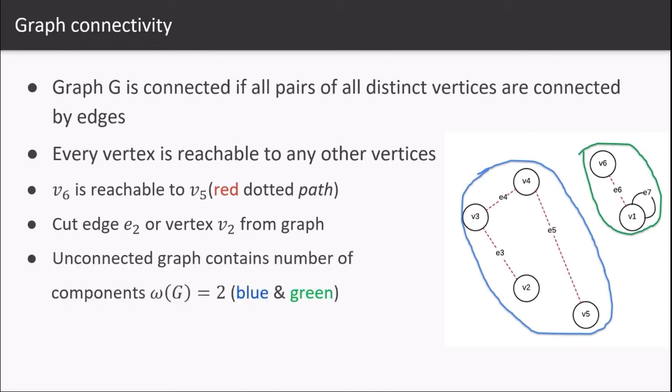If we cut the edge e2 or vertex v2 from the graph, we end up in an unconnected graph that contains a number of components equal to green and blue. So the graph on the right is one single graph, but it is unconnected with two components such that each component is a subset of the original graph G.